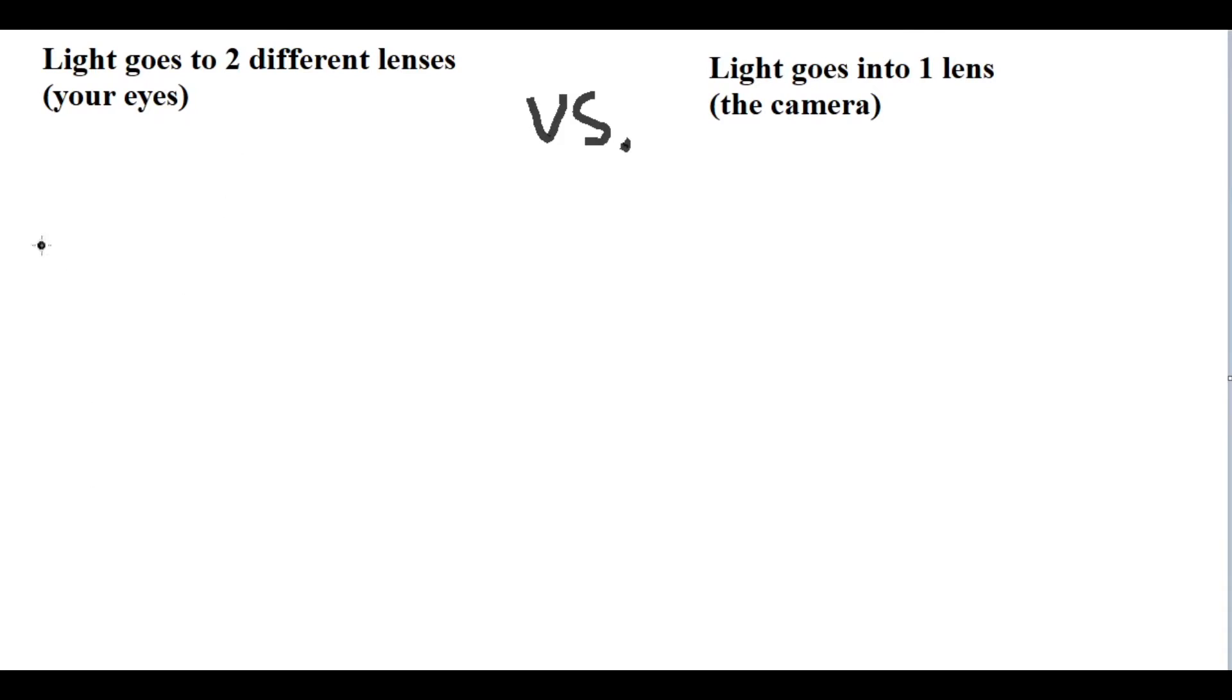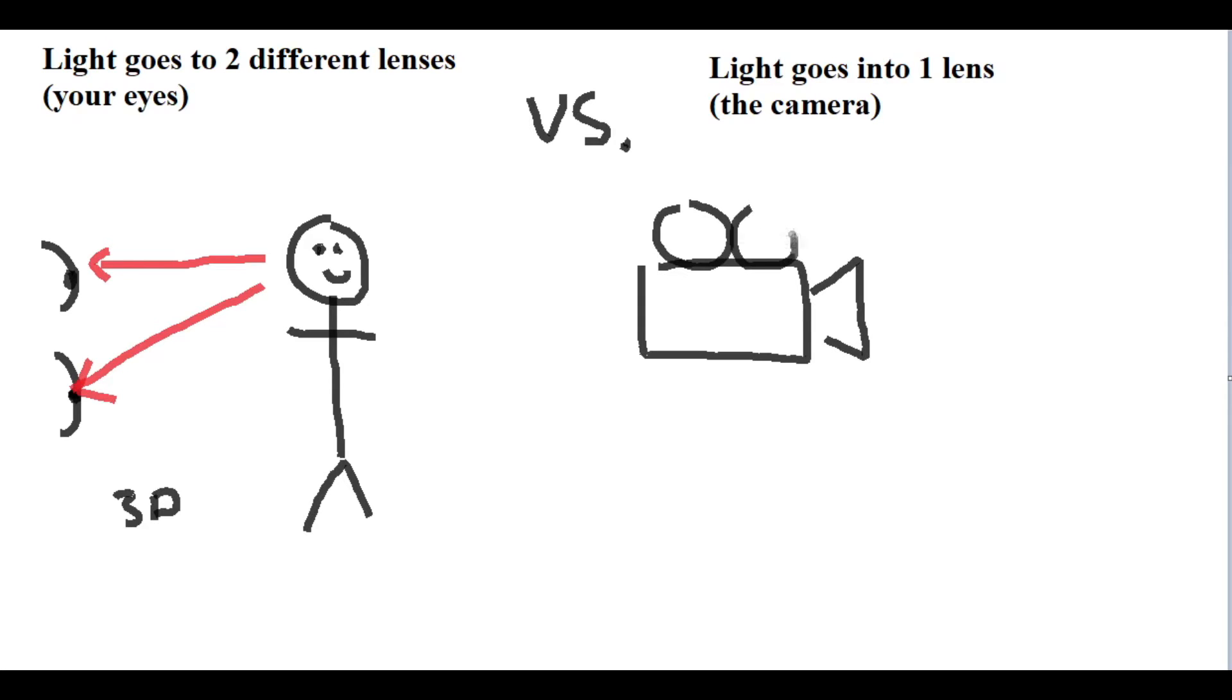So how exactly does this lead to us getting 3D images from these glasses? In order to get a 3D image, you need two different images in order to trick your brain into using depth perception. However, when watching a movie, we only have one image source, the screen.